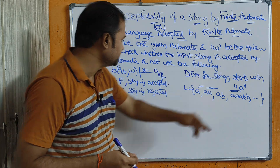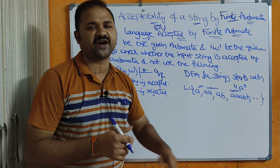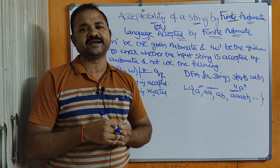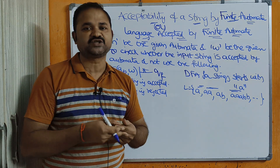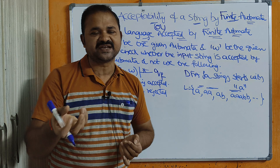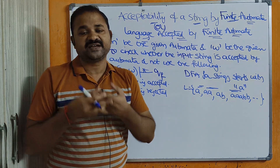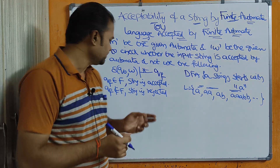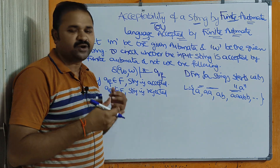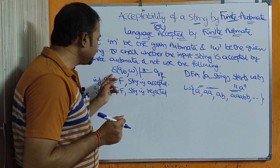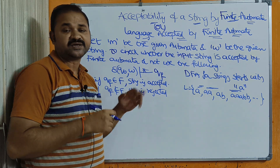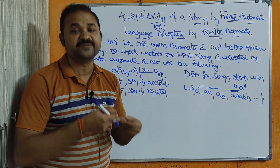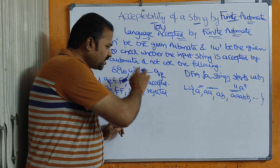To check whether an input string is accepted by a finite automata or not, we use the notation delta of q-naught comma w. Delta is the transition function and it accepts two arguments: the first argument is q-naught, the initial state, and the second argument is w, the input string.